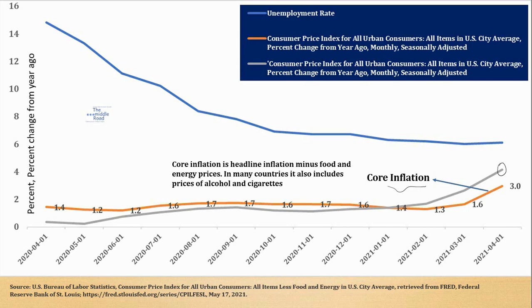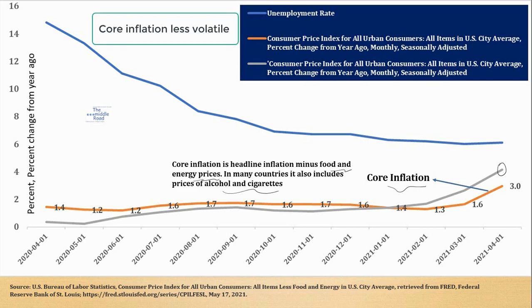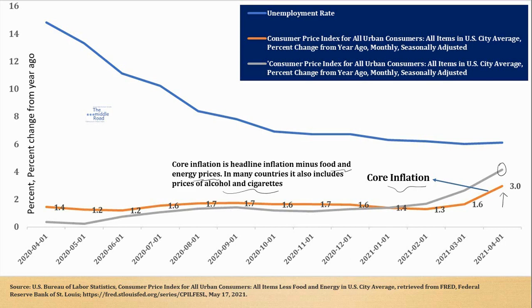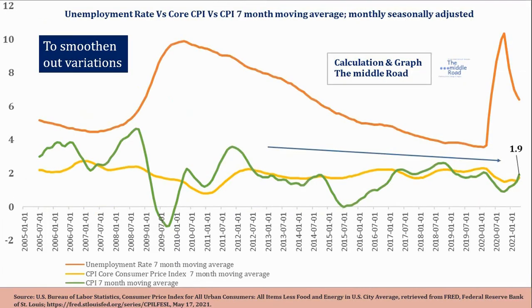It's important to understand why core inflation is more important — it removes the prices of food and energy (and sometimes alcohol and cigarettes). Food and energy prices are very volatile and could be temporary in nature, so you want something that is not seasonal or transient. That's why it makes sense to look at core inflation. You have also seen the core rise to about 3 percent over time. In this graph, we are comparing unemployment rate, CPI, and core CPI, using a seven-month moving average.